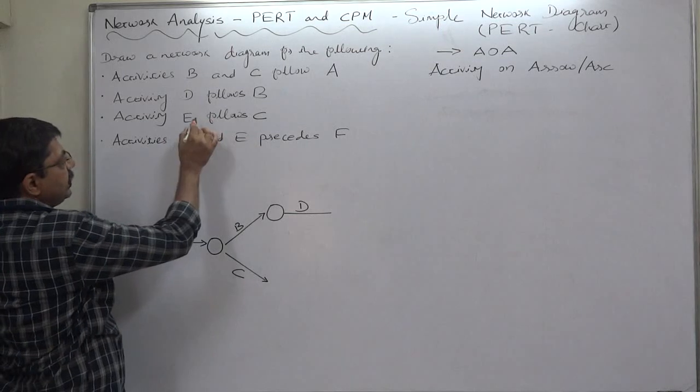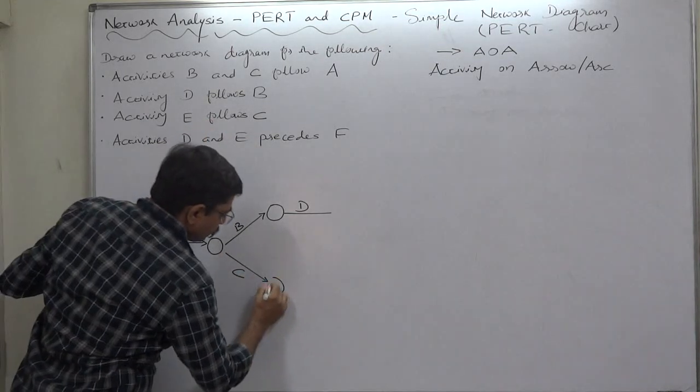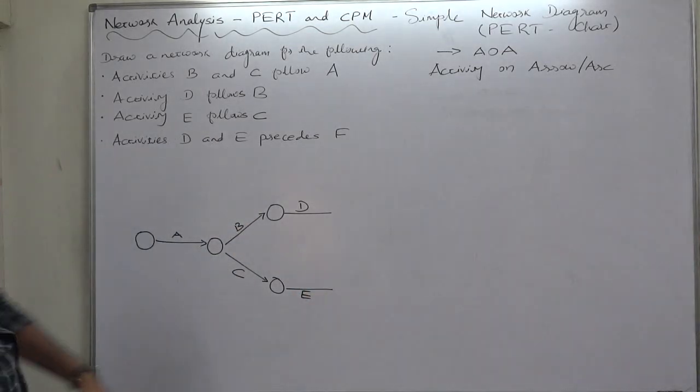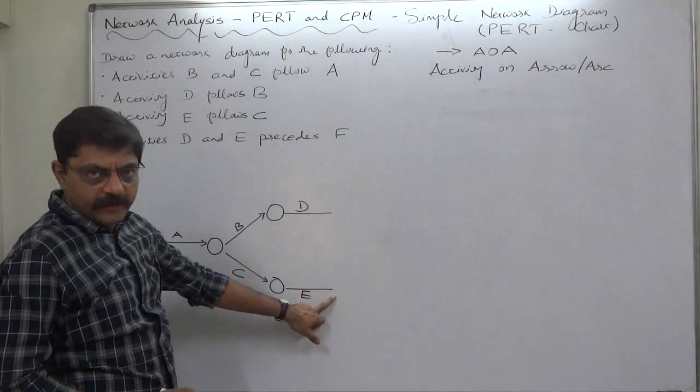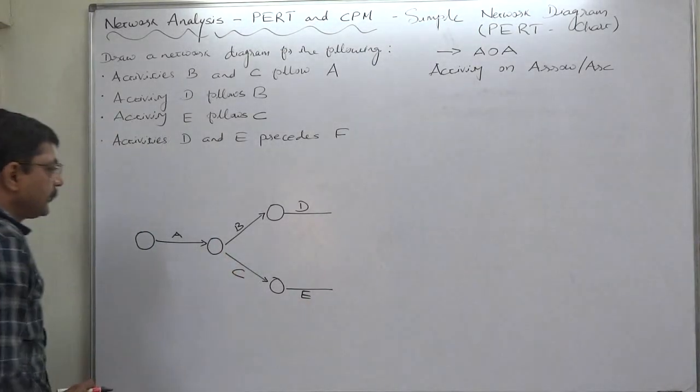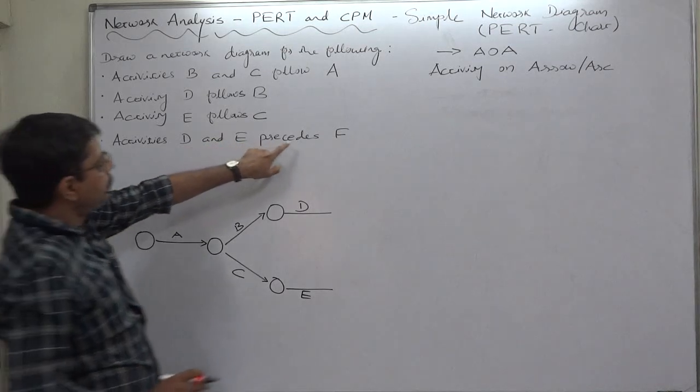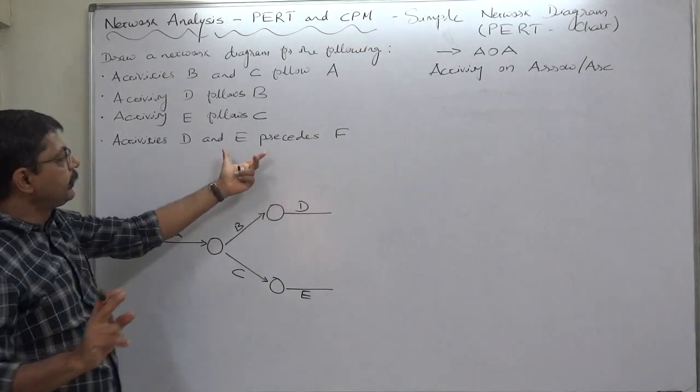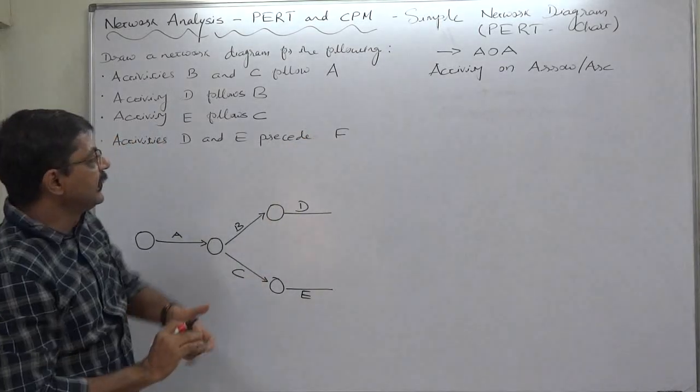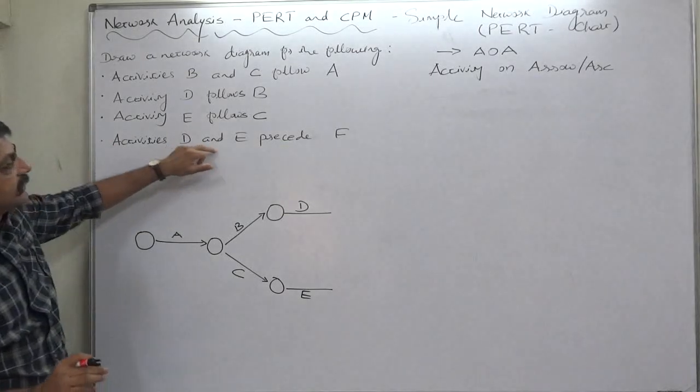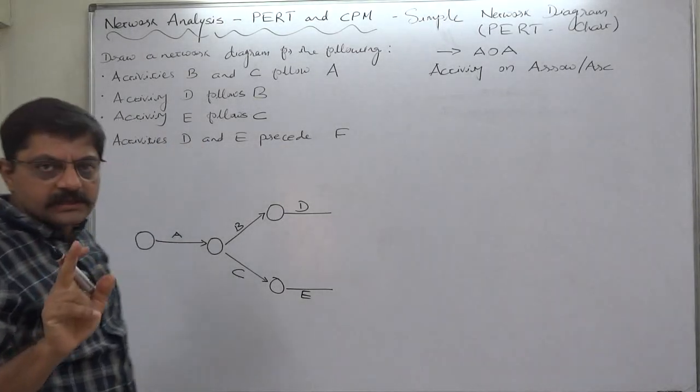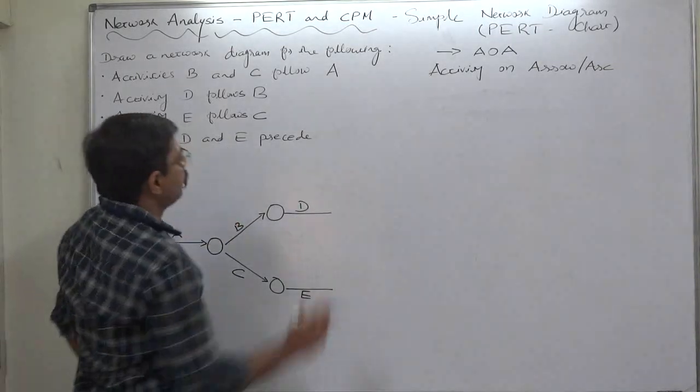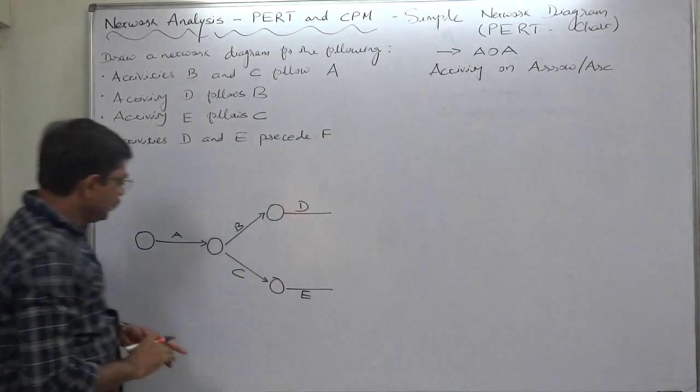That means B is predecessor of D and D is successor of B. So we can easily show D. OK, why I am not drawing the full arrow, that I will explain after few moments. E follows C, that means C is predecessor of E or E is the successor of C. OK say this is E. OK, again I am not drawing the full sign of arrow, there is a reason behind it.